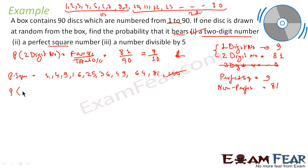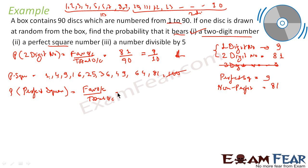Using the same formula: probability of perfect square = favorable outcome / total outcome = 9/90 = 1/10. So the probability of drawing a perfect square number is 1/10.